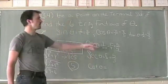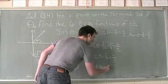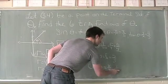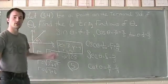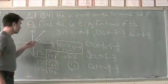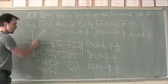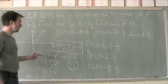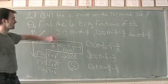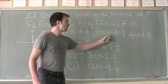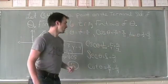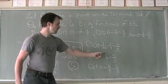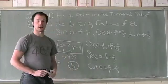Lastly, cotangent of theta is the inverse of tangent — x divided by y — which is 3 over 4. To summarize: we identified our angle theta, used the (x, y) point to find r, then set up all six relationships: sine = y/r, cosine = x/r, tangent = y/x, cosecant = r/y, secant = r/x, and cotangent = x/y.